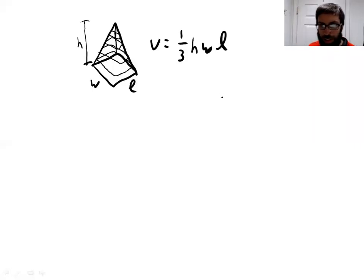Okay, so in this video we're going to be using calculus to show that the volume of a rectangular pyramid is one-third times its height times its width times its length.